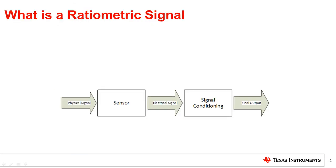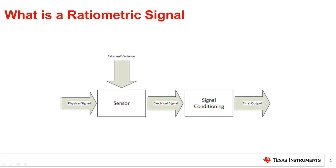A sensor is used to convert a physical signal or input into an electrical signal. A signal conditioning circuit then converts the electrical signal into an output, which can be used by an MCU for processing. The measurement of the physical input, though not affected by any other signal, can still be impacted by external variances such as a power supply. As a result, the output of the sensor may change in relation to the variation.